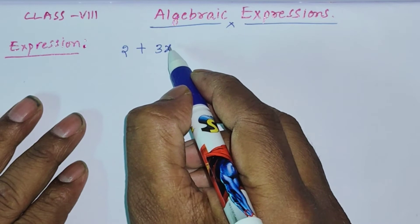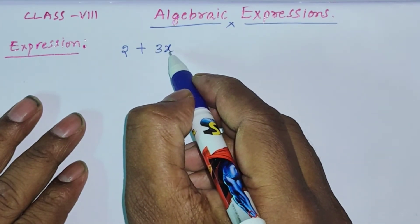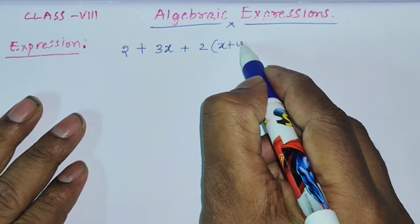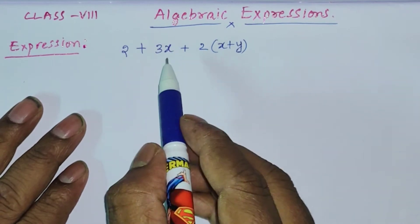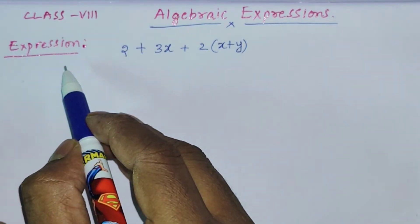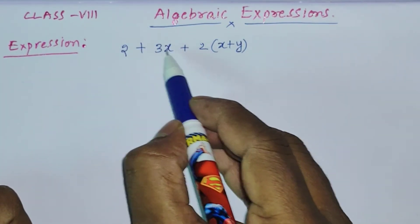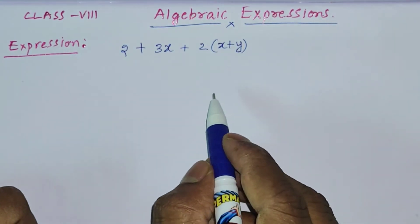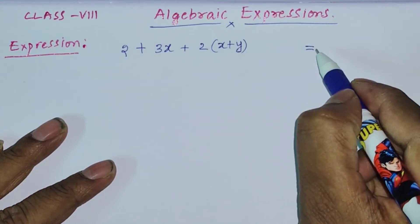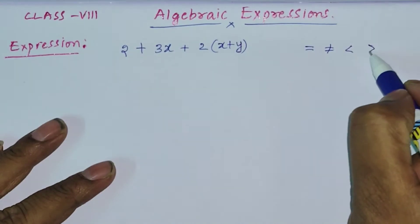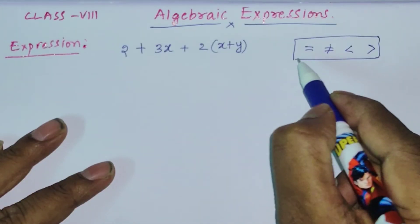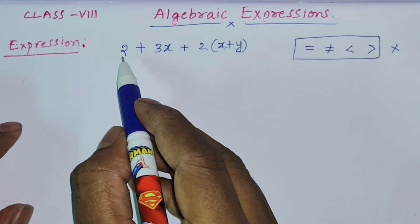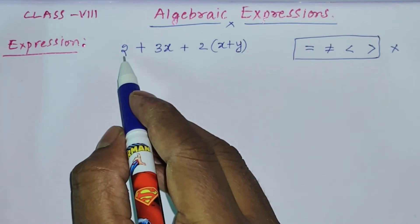So here we find a variable — a number multiplied by a variable. An expression is a combination of numbers and variables using some mathematical operators. Very importantly, an expression does not contain an equality sign, inequality sign, or less than and greater than signs. We don't find any of these operators in an expression.